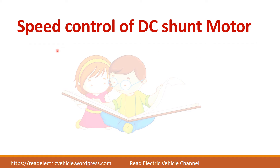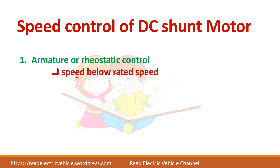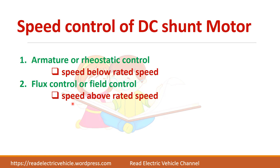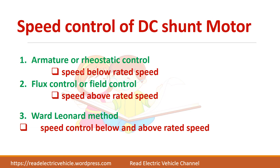So far we have seen speed control of DC motors. There are basically two types: armature or rheostatic control, which is used to control the speed below the rated speed; and flux control, where we are able to achieve speed control above rated speed. But if you want both — control below rated speed as well as above rated speed — there is one more technique called the Ward-Leonard method, where you are able to achieve both below and above rated speed control.